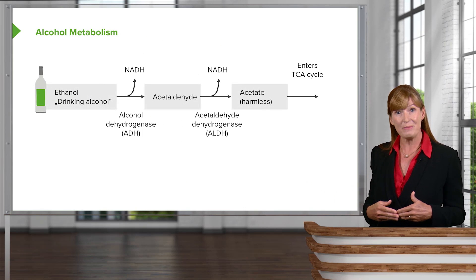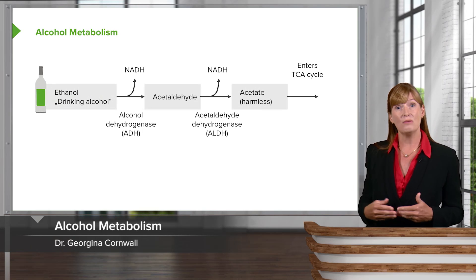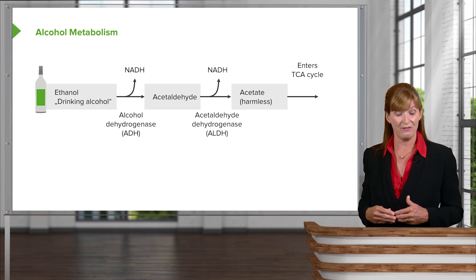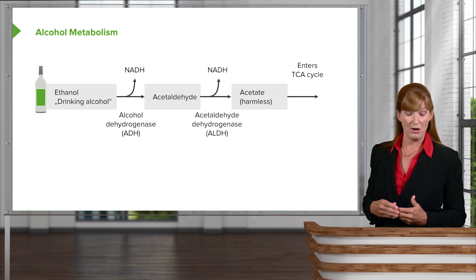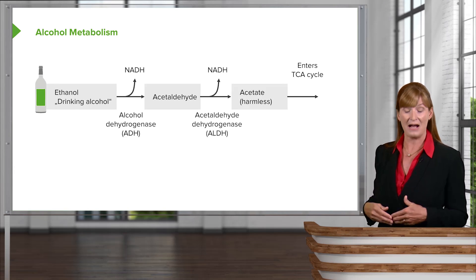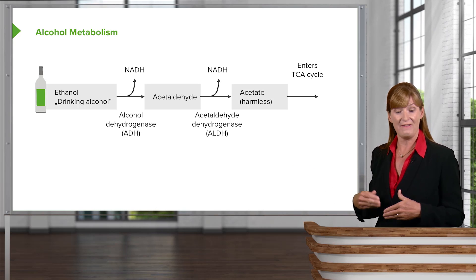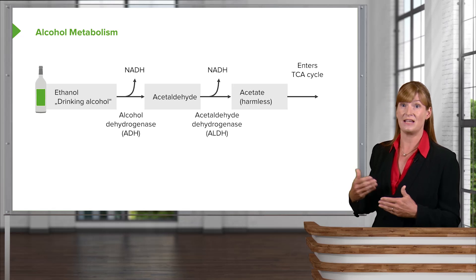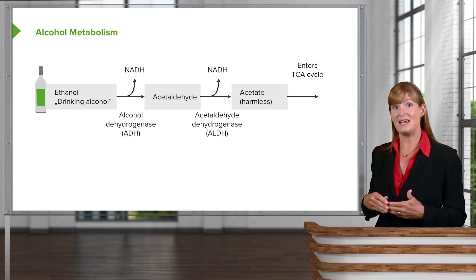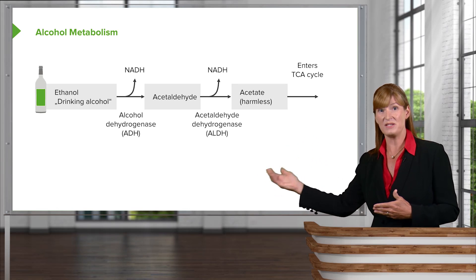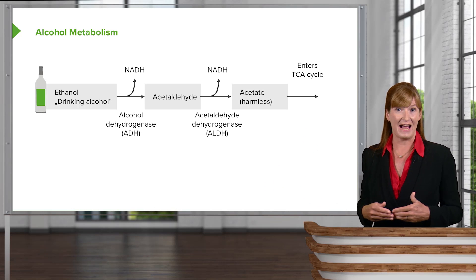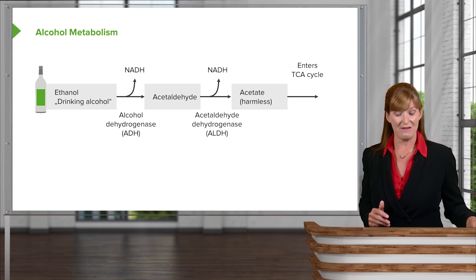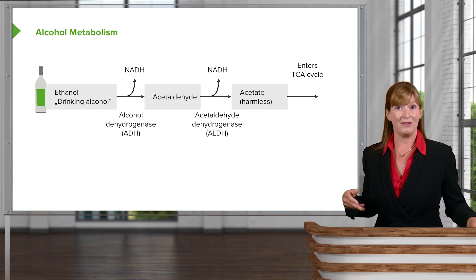Alcohol metabolism is a particularly hot topic in the multidisciplinary area of nutrition for the exams. I want to alert you to two key enzymes. Alcohol dehydrogenase is involved in the conversion of ethanol and some other alcohols to acetaldehyde. Then acetaldehyde dehydrogenase takes more hydrogens off, forming acetate, which can easily enter into the Krebs or TCA cycle to be metabolized. Acetate is harmless. Acetaldehyde, on the other hand, turns out to be fairly toxic.